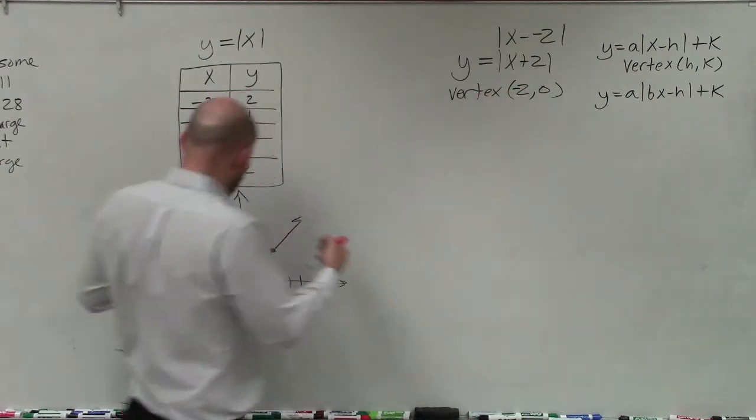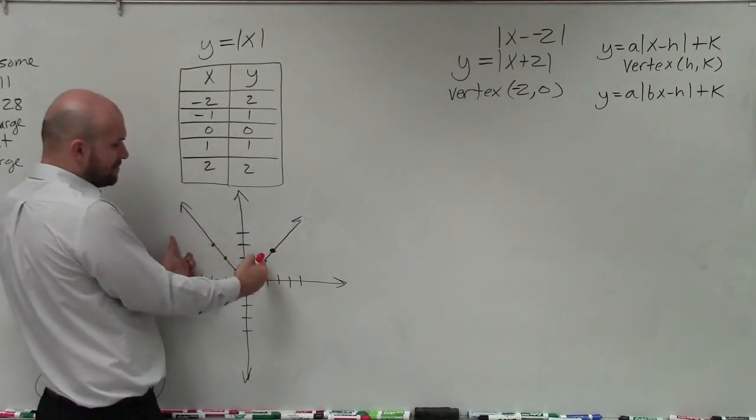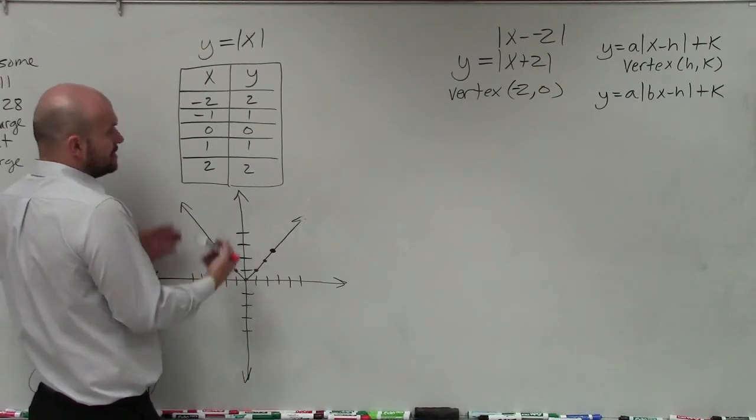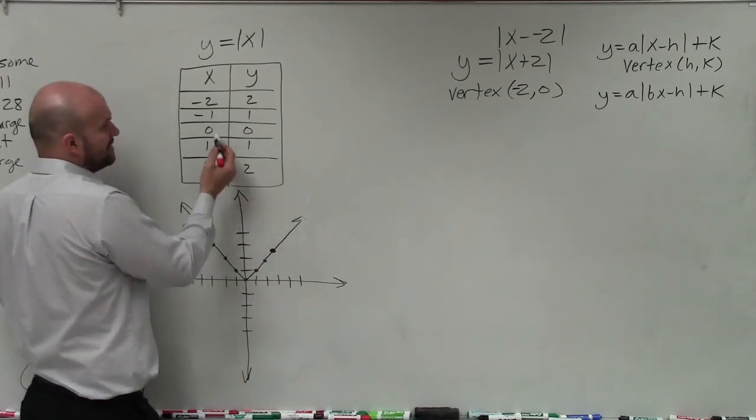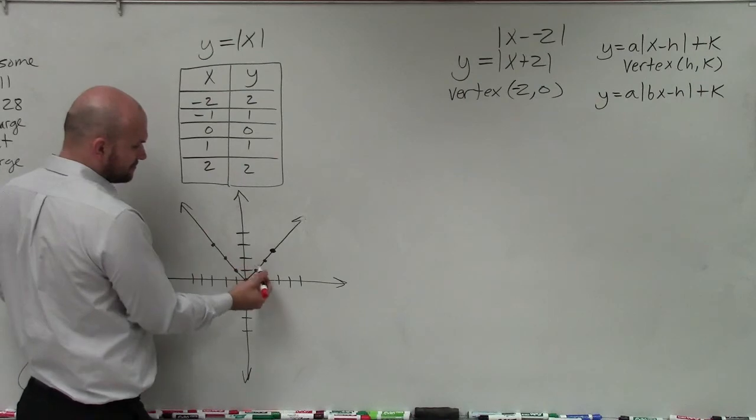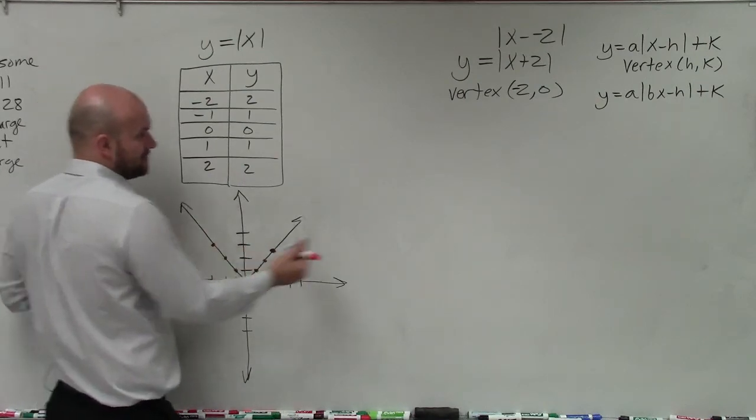So what that means is this graph, the absolute value of x plus 2, is basically this exact same graph but just shifted over 2 units. So I'm basically taking this graph and shifting it over 2 units.